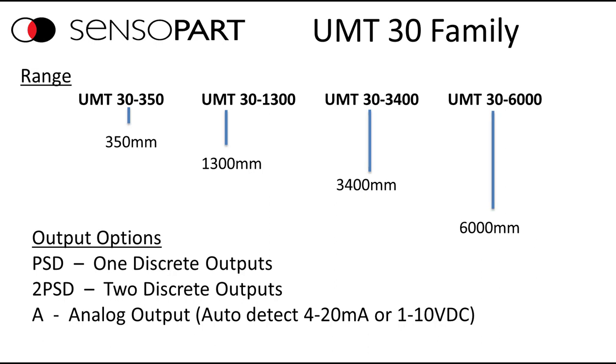And on the analog, it's auto-detect. If you hook it up to a 4 to 20 milliamp PLC input, it'll give you 4 to 20. Based on the voltage of the input card, if it's a voltage input card, it'll give you 0 to 10 volts DC.